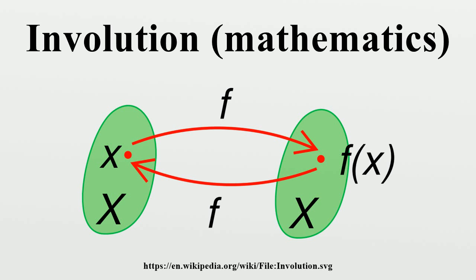Other examples include circle inversion, rotation by a half turn, and reciprocal ciphers such as the ROT13 transformation and the Beaufort polyalphabetic cipher. The number of involutions, including the identity involution...